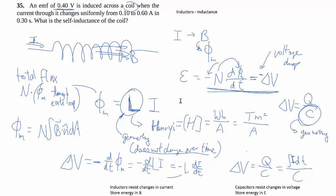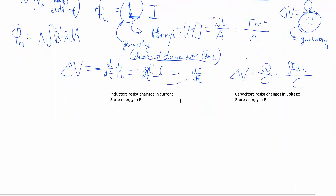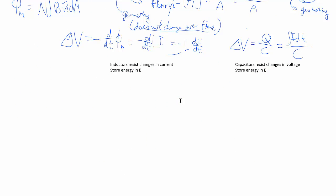So the current changes uniformly. So we have a ΔI over Δt. So really, all the theory aside, this is just a very straightforward plugging in and practicing the governing equation for the inductor, which is this guy here.